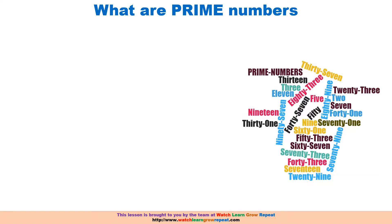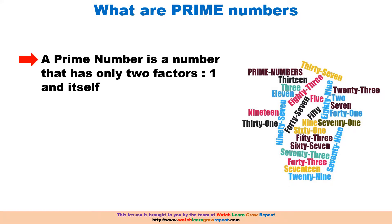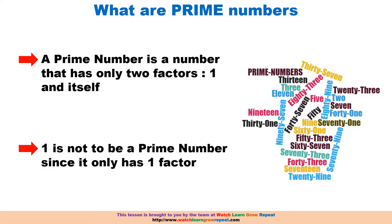So what are prime numbers? A prime number is a number that has only two factors: one factor is one, and the other factor is itself. In the case of the number one, that's not a prime number because it only has one factor, which is one itself — so it needs to have two factors to be a prime number.